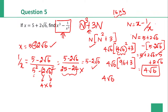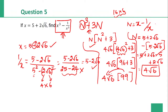So n value 4 root 6 into 99. Multiplying 99 into 4: 99 into 4 will be 396. So 396 root 6 is the right answer. The answer is 396 root 6 is the right answer.